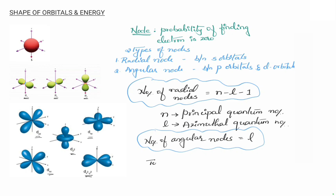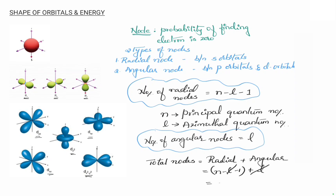The total number of nodes is the sum of radial nodes and angular nodes: (n minus l minus 1) plus l. The l values cancel, so the total number of nodes equals n minus 1. This is how you calculate total nodes, angular nodes, and radial nodes.